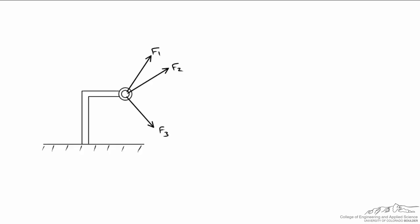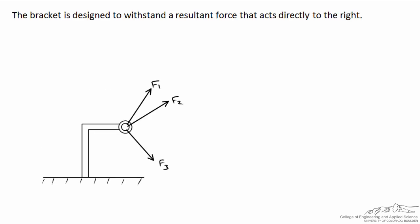Here's our third rope acting down and to the right. So what we're after is a vector sum that acts directly to the right, and we'll call this FR the resultant force. Just keep in mind that this resultant force is not a fourth rope, it's just the vector sum of all three of the ropes.